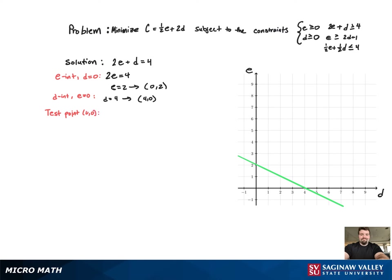And when we plug that in, we're going to get 0 greater than or equal to 4, which is false. 0 is not greater than or equal to 4. So we're going to have to shade the region that does not contain 0, 0, which is above the line.